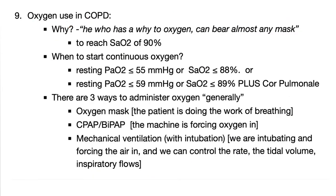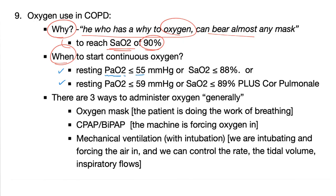Oxygen use in COPD: why? To reach an oxygen saturation of 90% or more. When to start oxygen therapy — if one of these conditions is met: resting arterial PO2 less than 55 mmHg or SaO2 less than 88%; or, if the patient has cor pulmonale, resting PaO2 less than 59 or SaO2 less than 89%.